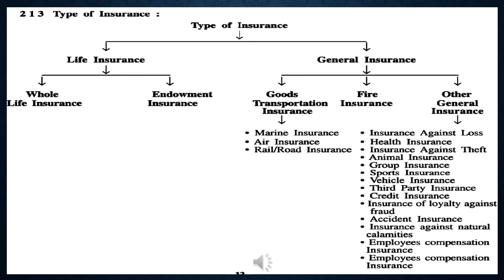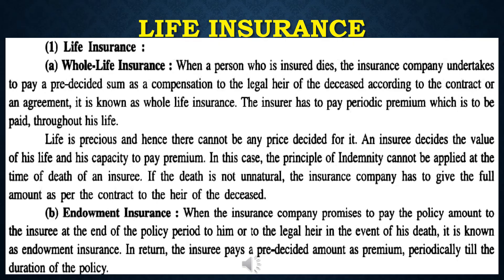Other general insurance is divided into: insurance against laws, health insurance, insurance against theft, animal insurance, group insurance, sports insurance, vehicle insurance, third party insurance, credit insurance, insurance of loyalty against fraud, accident insurance, insurance against natural calamities, employees compensation insurance, employer compensation insurance, life insurance, and whole life insurance.